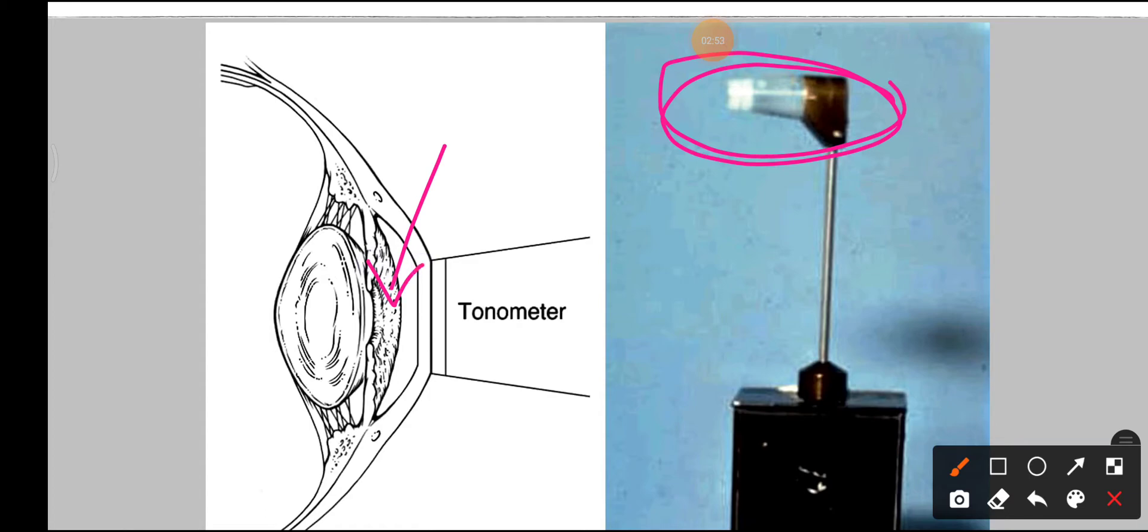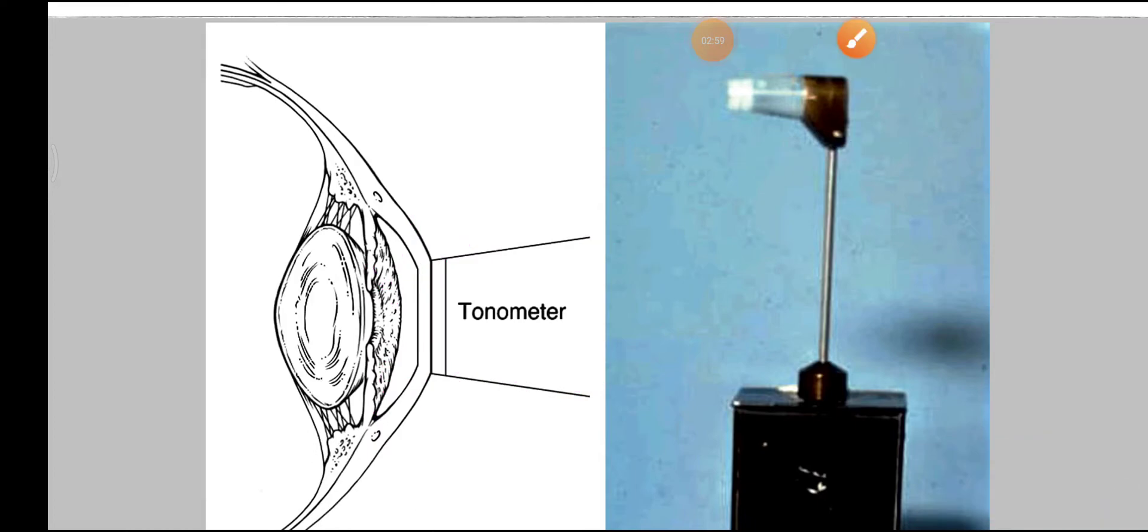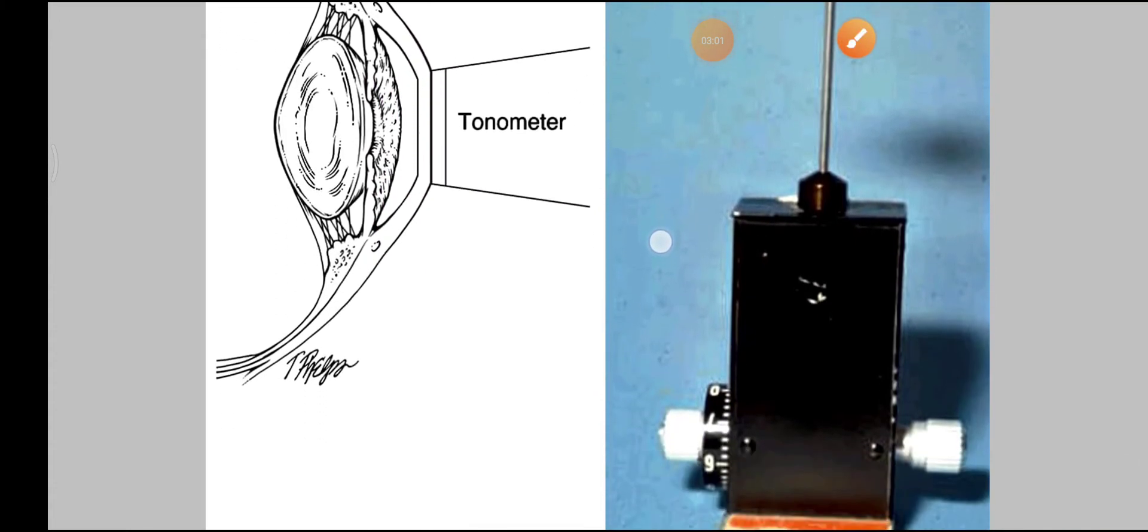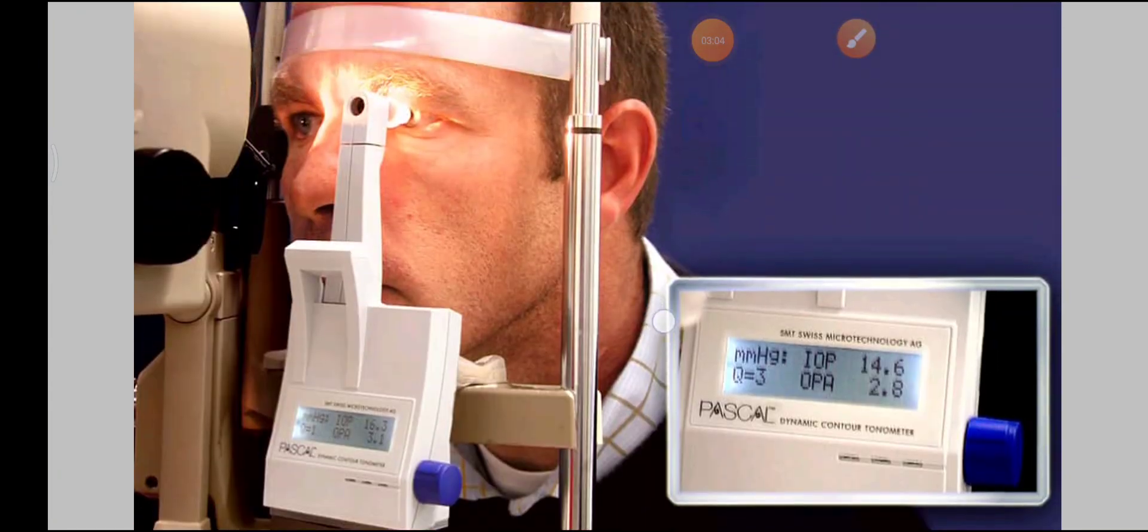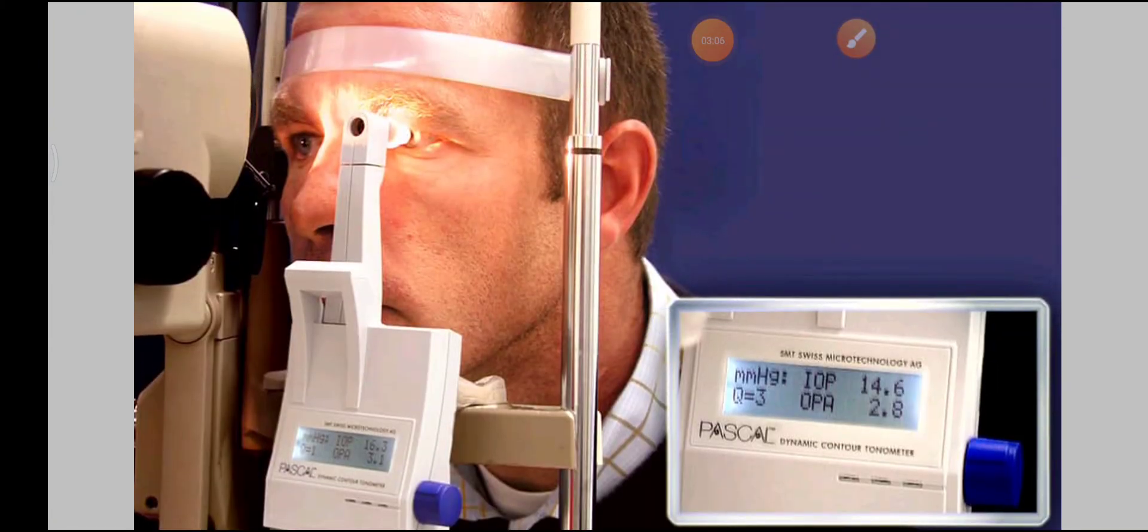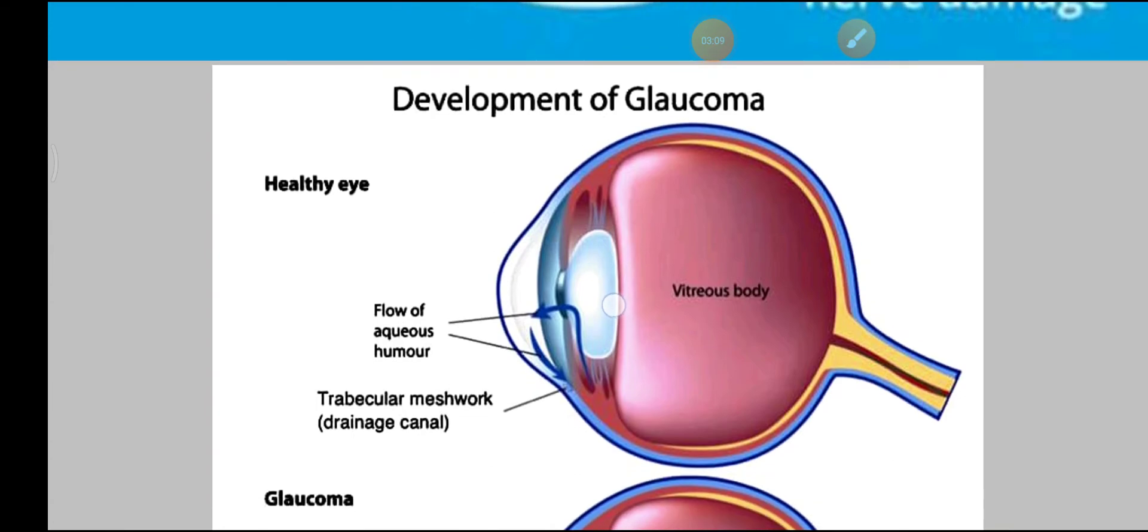So the actual reading can be taken, and this is how the intraocular pressure is measured. This is the old technology; nowadays there is an electronic tonometer which gives the reading.